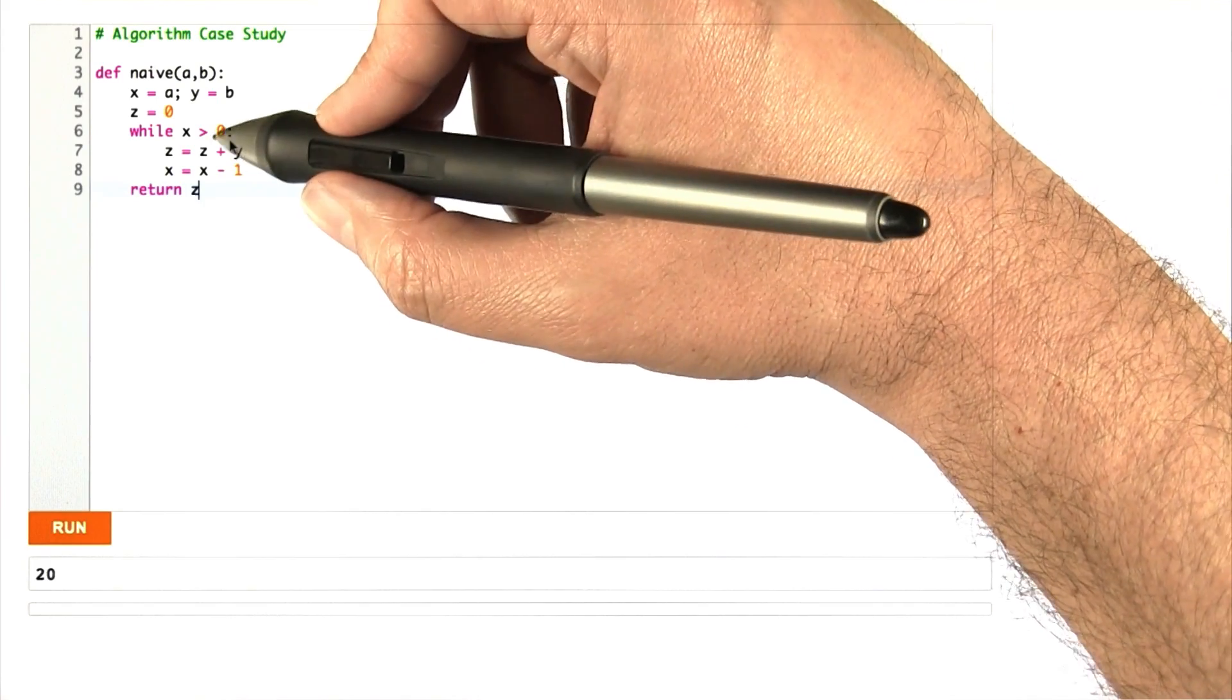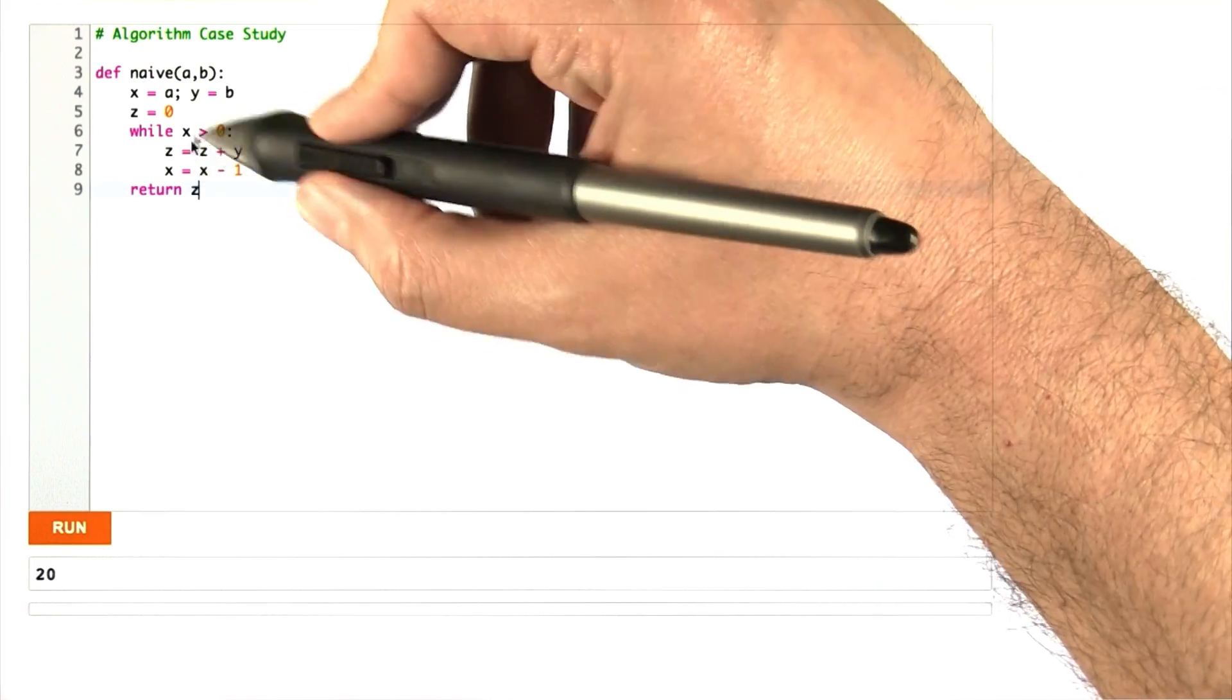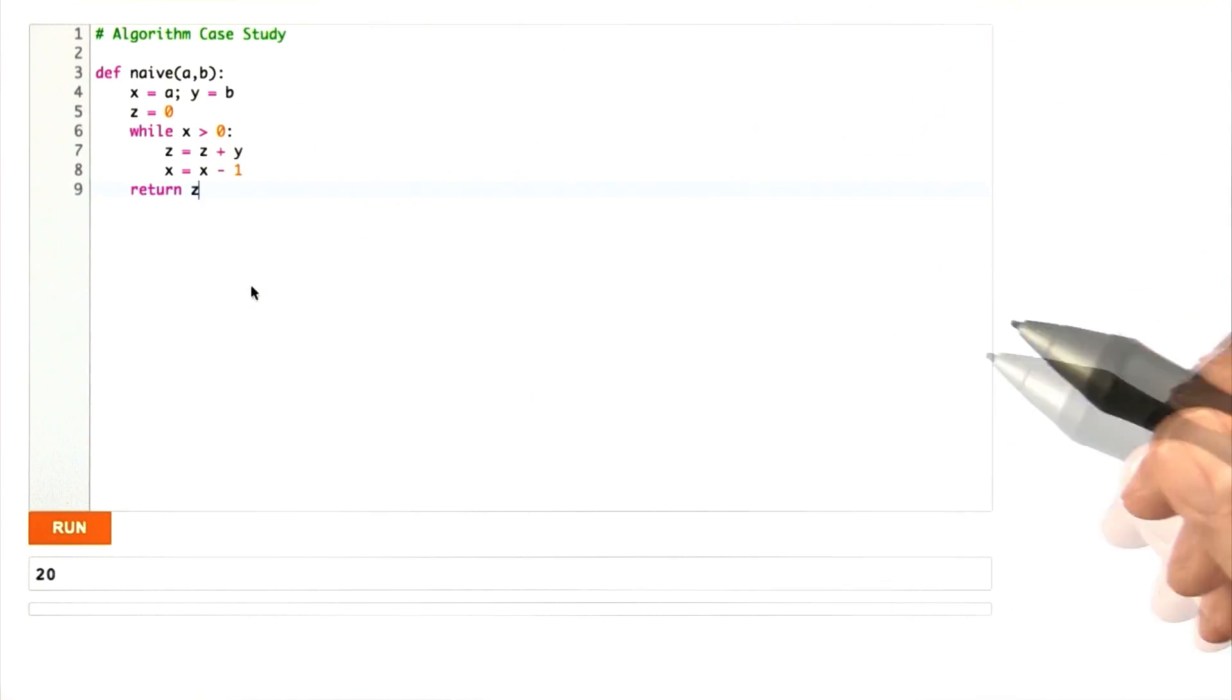So let's just take a look at the code again and see that that's what it's doing. Each time it goes through, it's decrementing X, accumulating the values in Z, and eventually when X is exhausted, it returns Z, and it is exactly A times B.